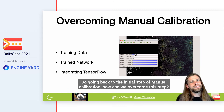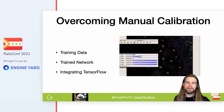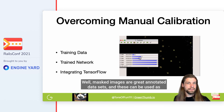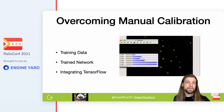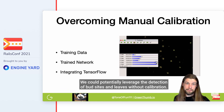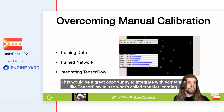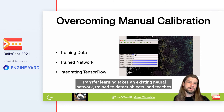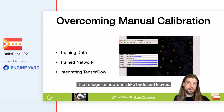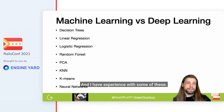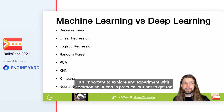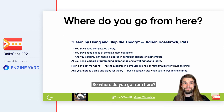Going back to the initial step of manual calibration — how can we overcome this? Masked images are great annotated datasets and can be used as training data for training a neural network. We could potentially leverage the detection of bud sites and leaves without calibration. This would be a great opportunity to integrate with something like TensorFlow to use transfer learning, which takes an existing neural network trained to detect objects and teaches it to recognize new ones like buds and leaves. There's a lot of theory and techniques out there, but it's important not to get too overwhelmed — especially when starting out.